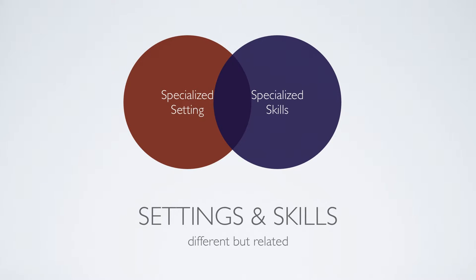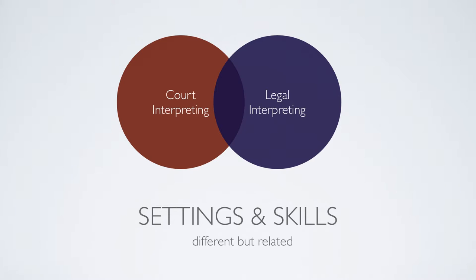We'll also talk about settings and skills. Specialized settings and specialized skills are often related, but they are different. For example, court interpreting requires legal interpreting skill, but legal interpreting skills can also be used in other forms of legal and law enforcement settings — for example, in a police station, reading somebody the Miranda rights, or having an interrogation. Those kinds of settings would require somebody with specialized skills in legal interpreting.